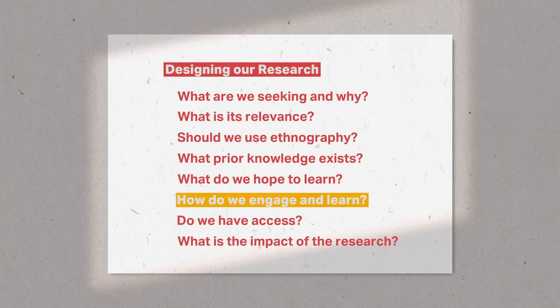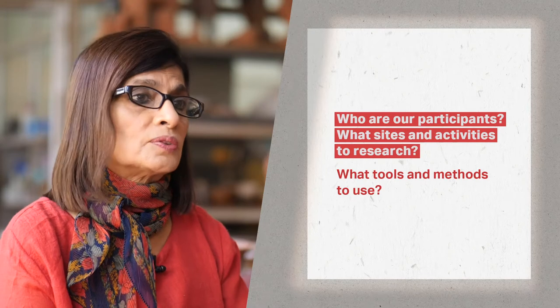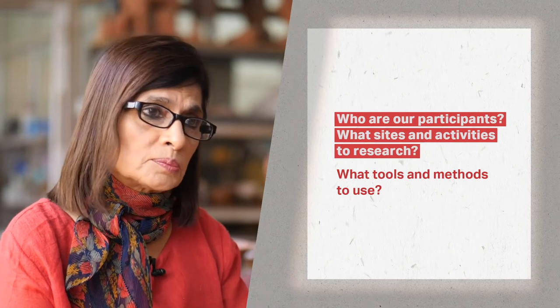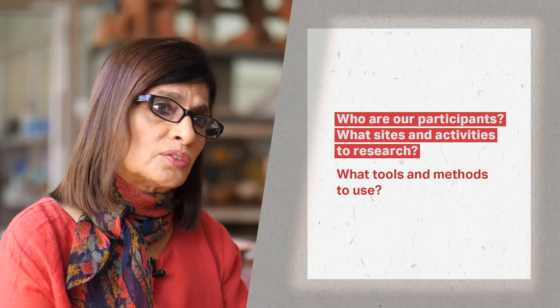The examples in this section refer to an important and exciting question on our list. This question is most relevant to how we plan our fieldwork — what people, locations and activities to engage with, and what tools and methods to use. There are two aspects to this question: the first is who are our participants, and what are the activities and sites of our research?